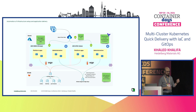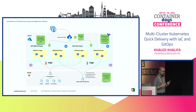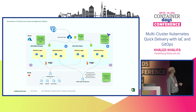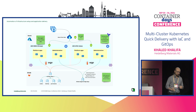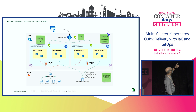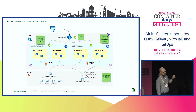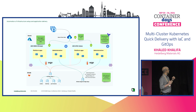Now I can walk through the diagram. This represents one platform, and the blue boxes are basically the clusters. Each cluster has its own Argo CD instance. The global applications Argo CD pulls things and synchronizes independently — each cluster has one Argo CD instance that takes care of pulling changes and applying them.